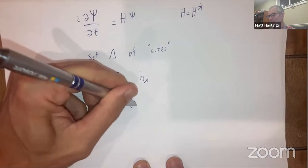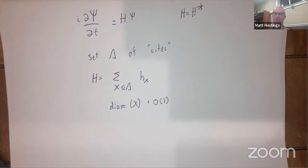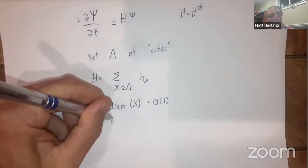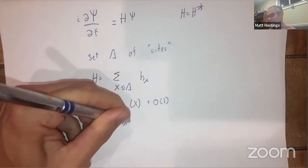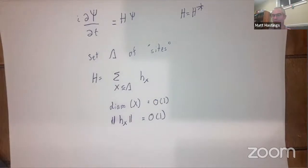We assume these interactions are local: each set X has small O(1) diameter. Everything in this talk is finite — a finite number of sites, finite dimensional Hilbert space, O(1) dimension per site. We imagine a family of Hamiltonians of increasing size, but the diameter of each interaction set and the strength of each interaction (measured in operator norm) are both fixed to O(1).